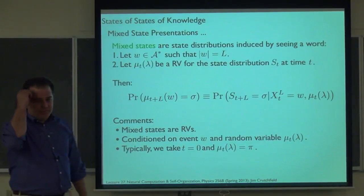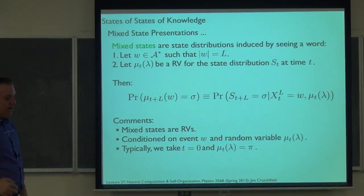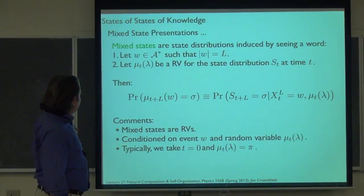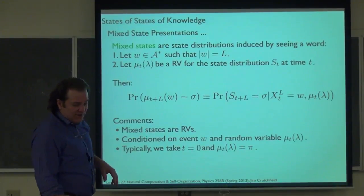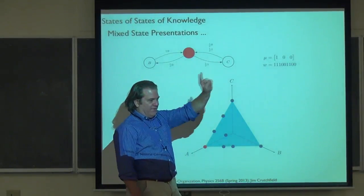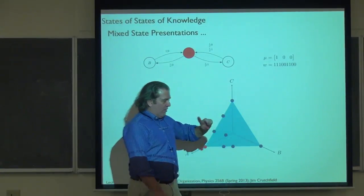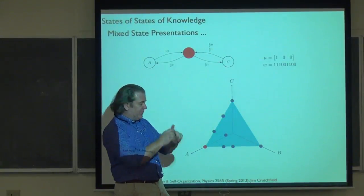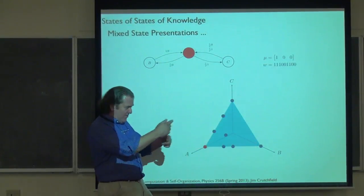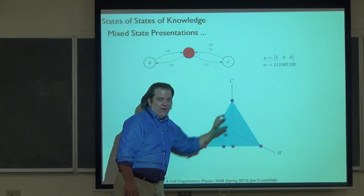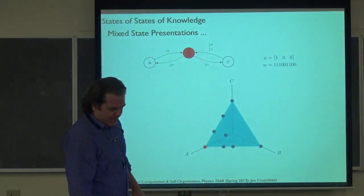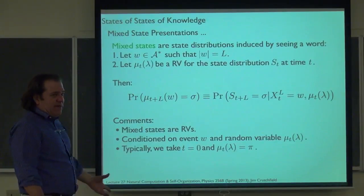The main idea: I made an assumption that we start in the asymptotic state distribution pi, and we're just trying to answer the question, how do we update our knowledge of the state? So what are these mixed states? In the simplex we had various points. We're thinking of them as a random variable — actually a point in the simplex that's hopping around. We have an induced dynamic over a new kind of state space — the state distribution space, the simplex.